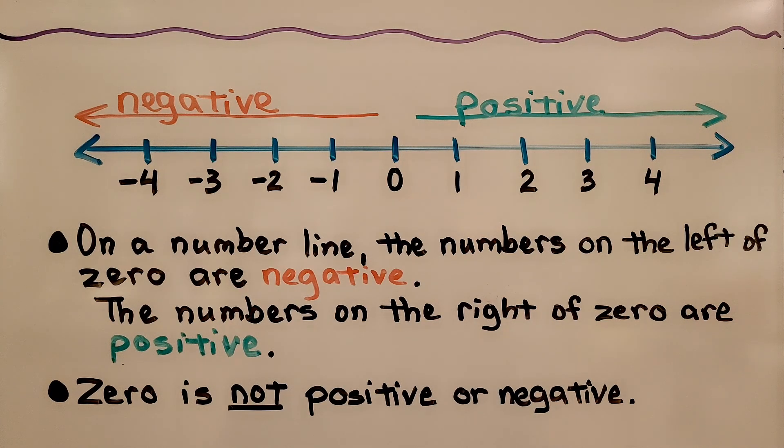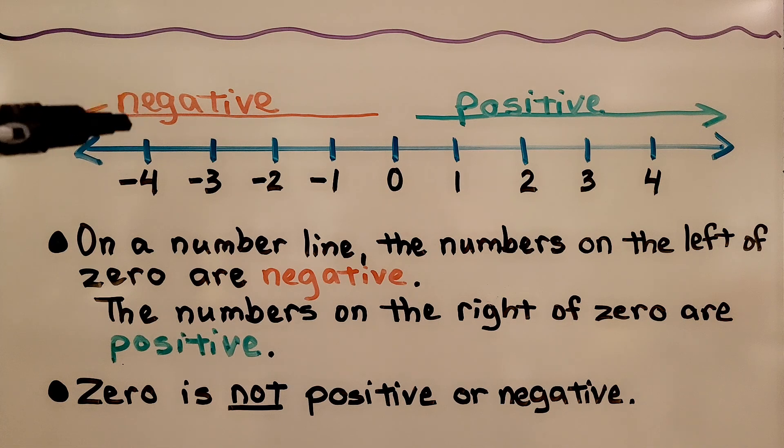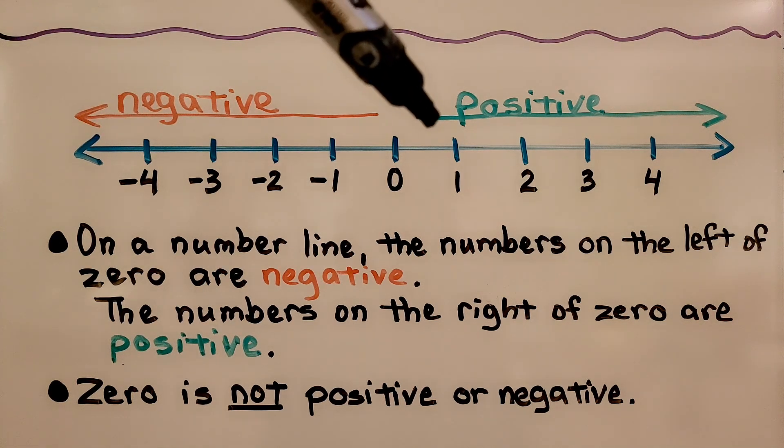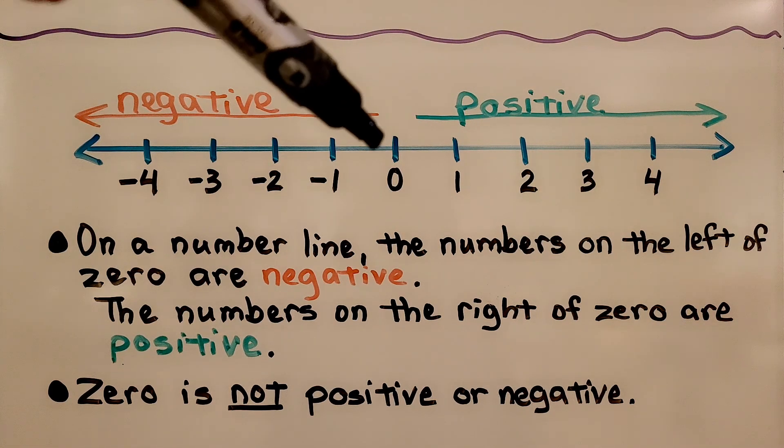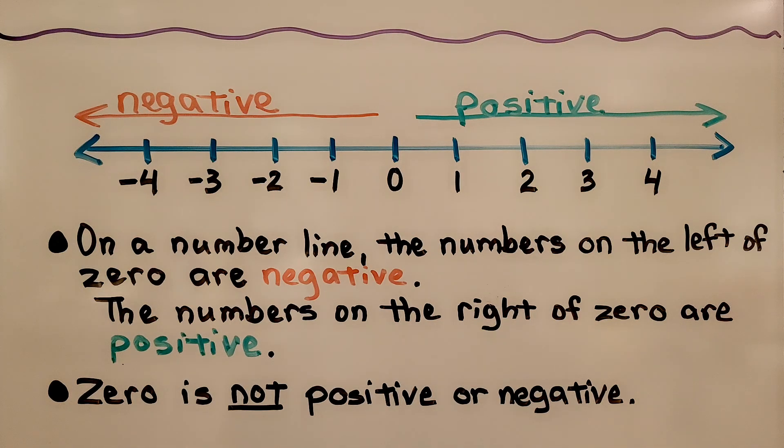On a number line, the numbers on the left of zero are negative. The numbers on the right of zero are positive. Zero is not positive or negative.